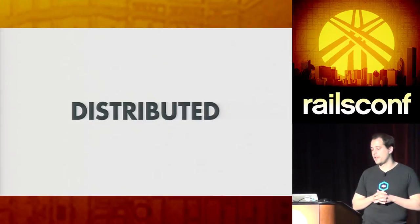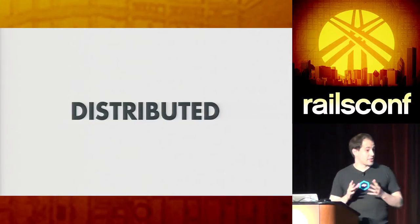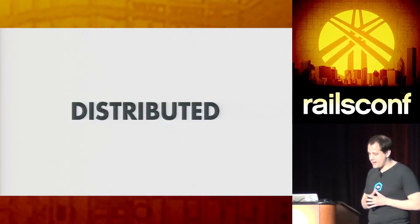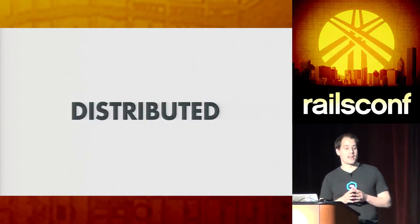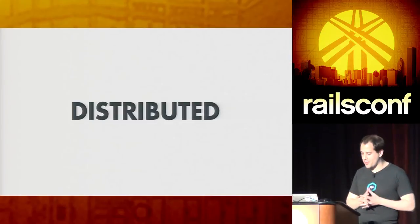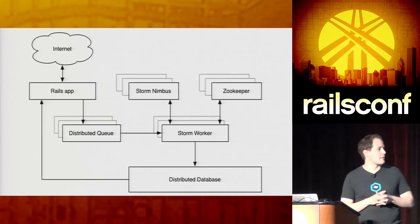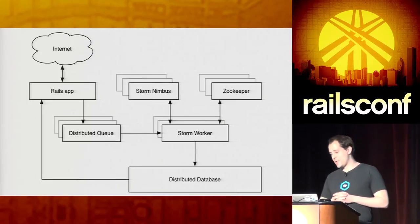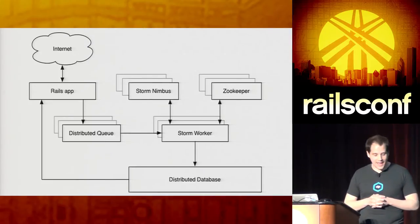Storm is a really powerful worker system. Some things about it: it is distributed — very, very, very distributed, which is a good and a bad thing. The good thing is you can spread your load across many servers. The bad thing is your ops system is going to look something like this, which can turn out to be somewhat of an operational headache.